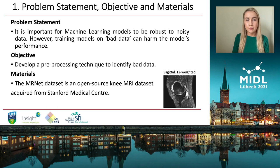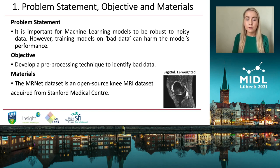Our problem statement: while it is important for machine learning models to be robust to noisy data, there can exist bad data in the training data that can actually harm the model's performance. We refer to bad data as, for example, an MRI that has no anatomical information present within the field of view. Our objective is to develop a pre-processing technique to identify this bad data so that it can be removed from the training data before further analysis.